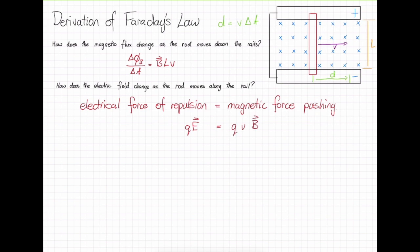We also know that the electric field is equal to the voltage divided by the separation between them. Substituting these things and cancelling out, we get that the voltage divided by the length is equal to the velocity multiplied by the magnetic field. This gives us the voltage is equal to the velocity times the length times the magnetic field. This is defined as EMF.